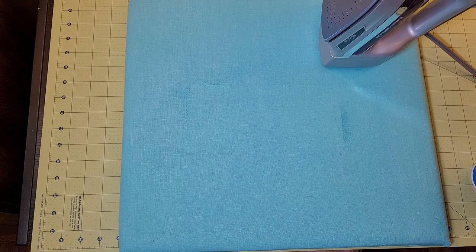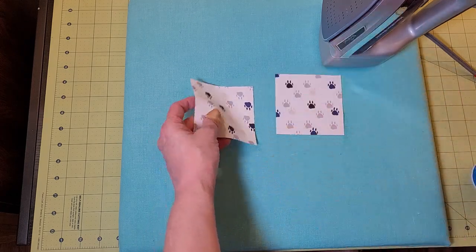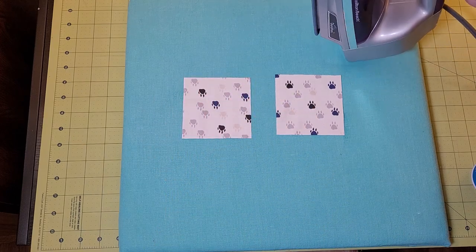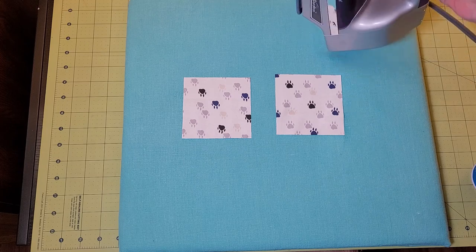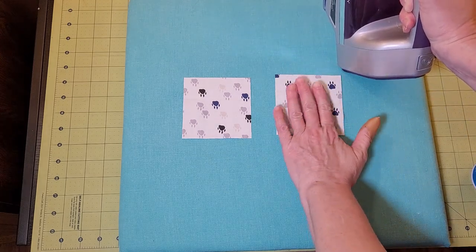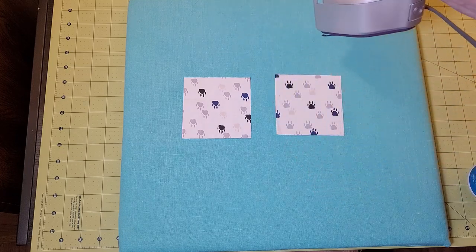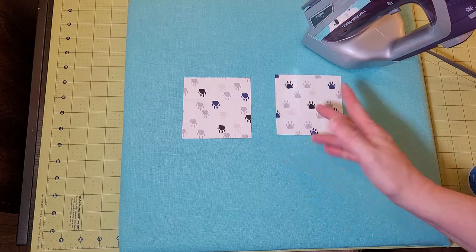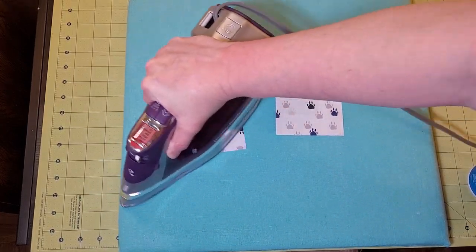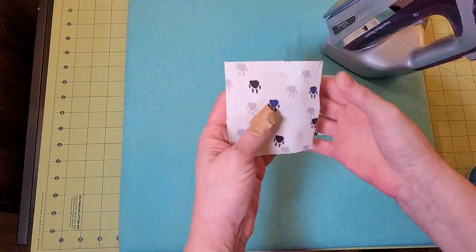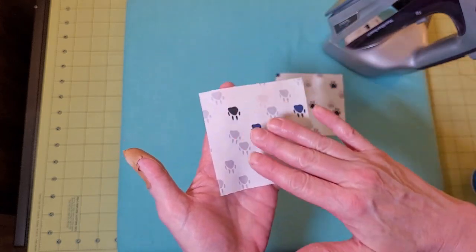The second thing that I'd like to show you is I've got two exact same size squares here. There is a difference between pressing and ironing. If you're making a quilt block and it tells you to sew certain pieces together and then press, you're just pressing. When you iron, you're doing this sort of thing, and it stretches your fabric out. The fibers will move this way and that way.